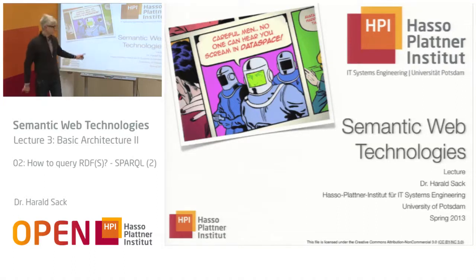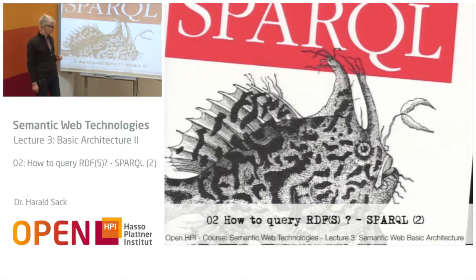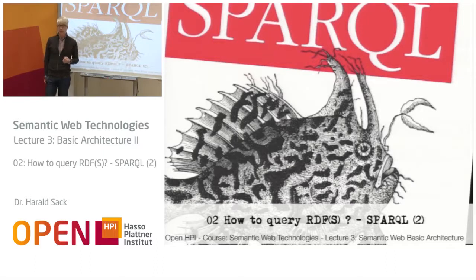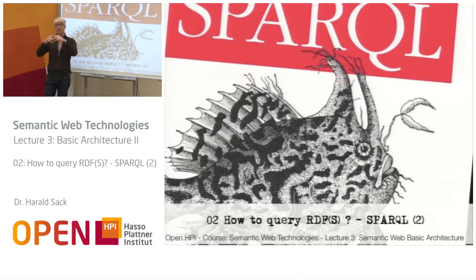This is Semantic Web Technologies Lecture Number 3, Basic Architecture of the Semantic Web, Part 2. We continue with the question of how we can query RDF or RDFS databases and knowledge bases with the help of the SPARQL query language. In the last part of the lecture, we learned the basics about SPARQL and how an RDF graph is traversed with SPARQL, which is a graph query language that forms graph patterns matched against the RDF graph.